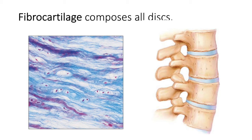You can kind of see that fibrocartilage has a wavy, watery appearance. The important thing to note about this tissue is that there's a stain specific for it, and it's always going to look blue.